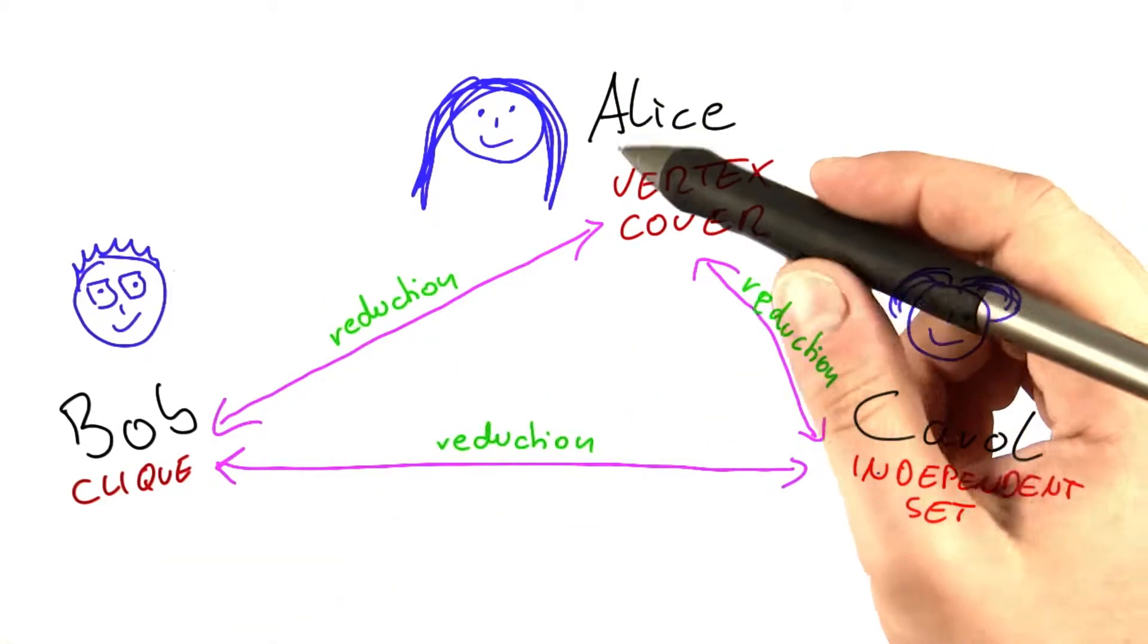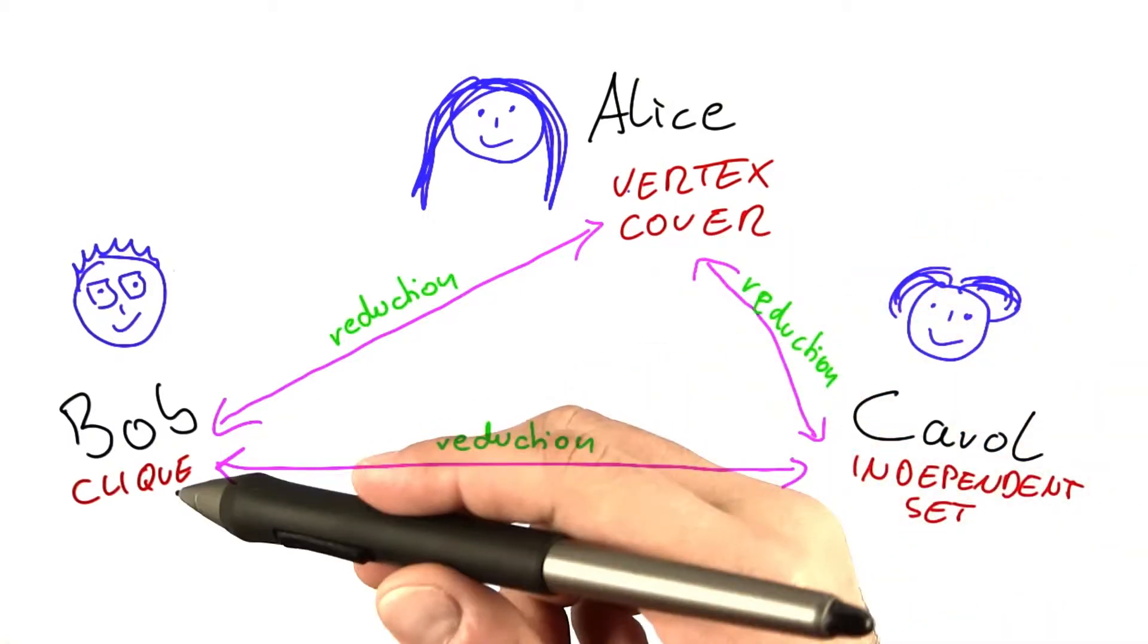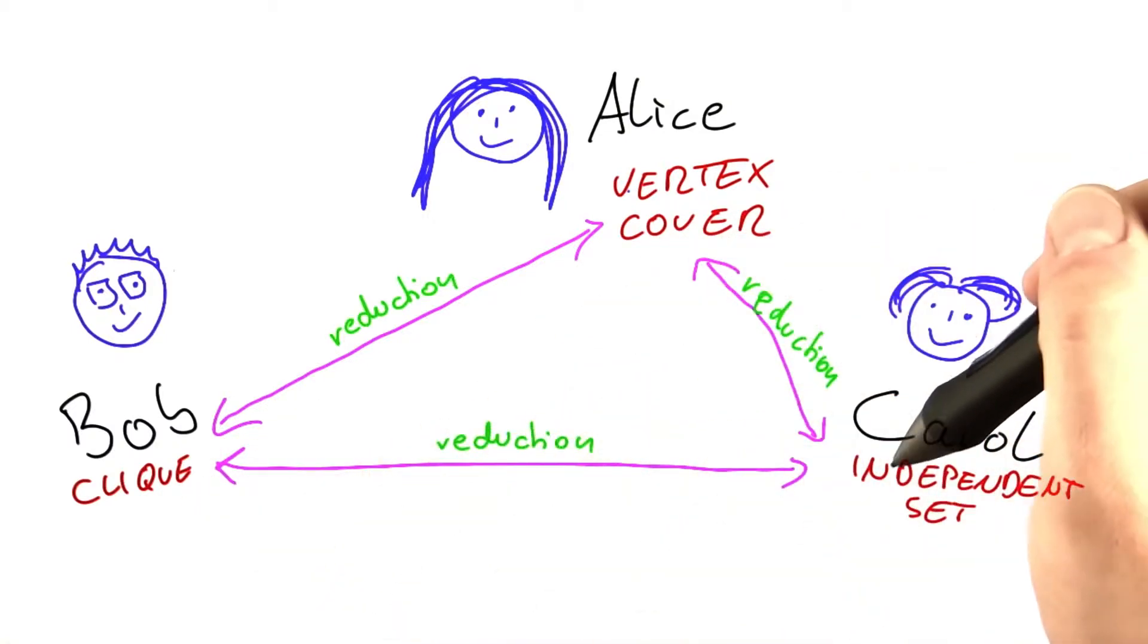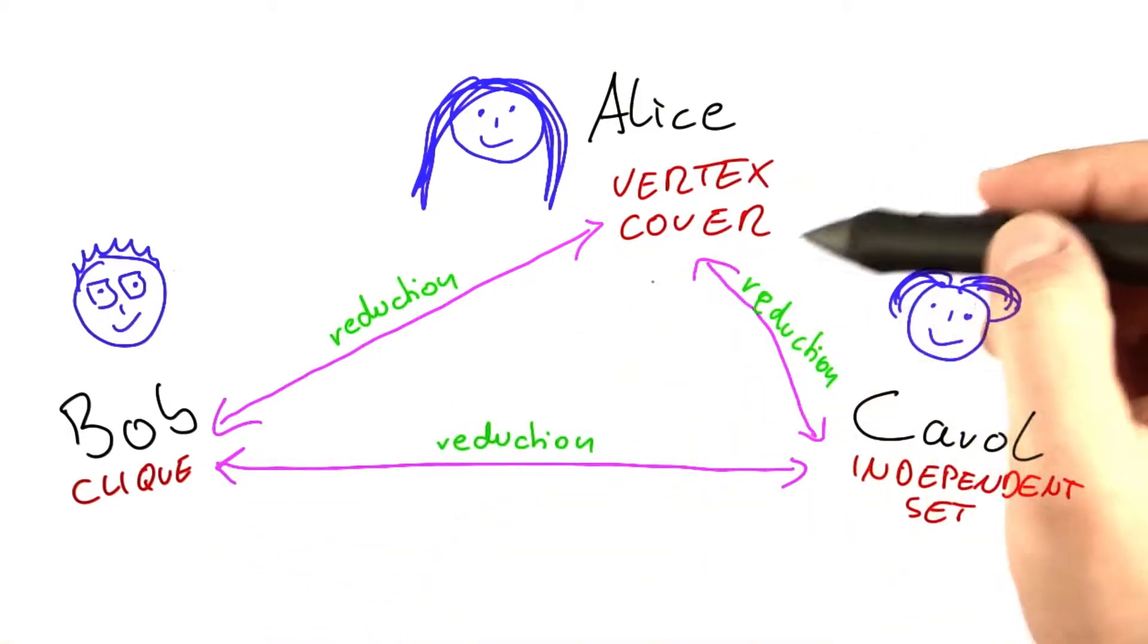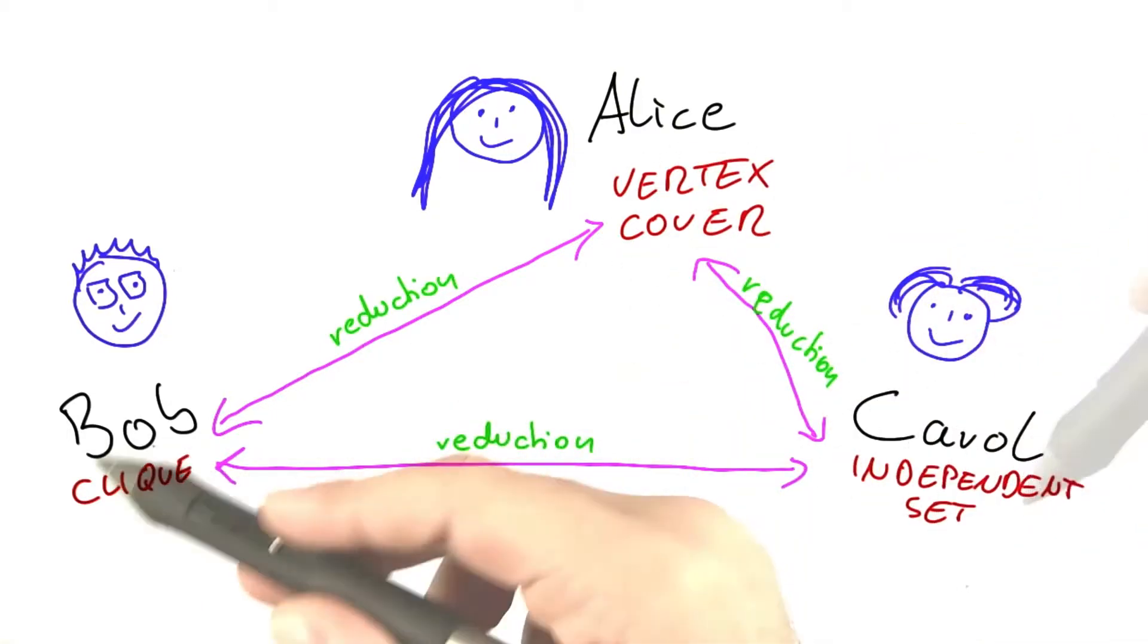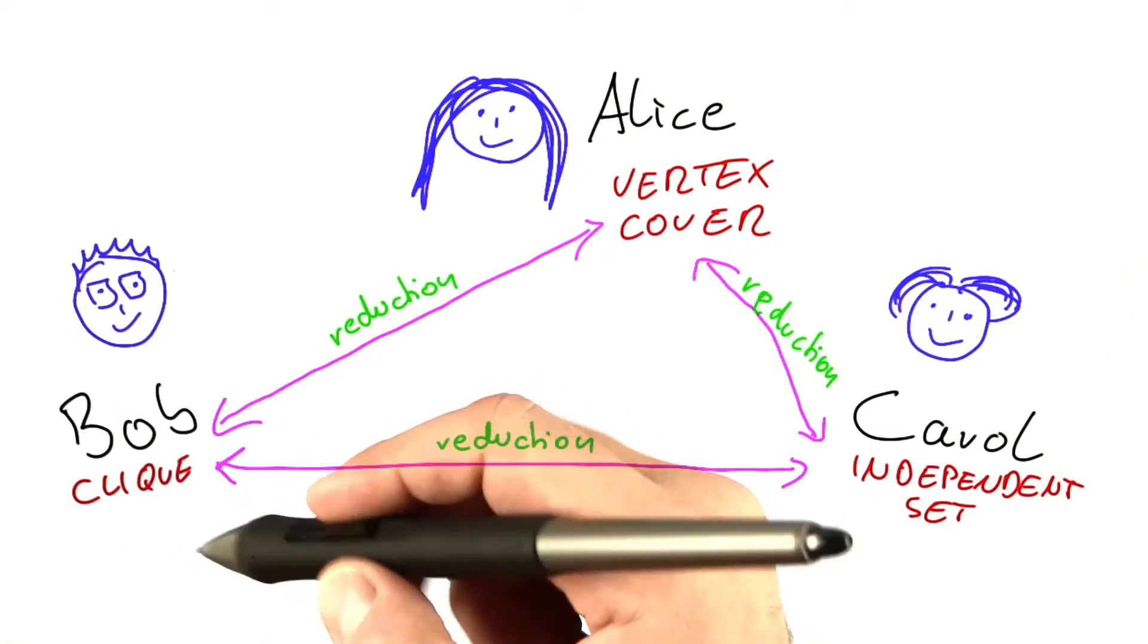And to do that, what we need to do is reduce SAT to one of their problems. And we're going to do this with CLIQUE. It's also possible to do it with vertex cover or independent set, but CLIQUE is actually one of the easier ones to see.